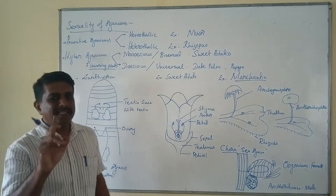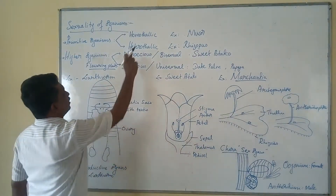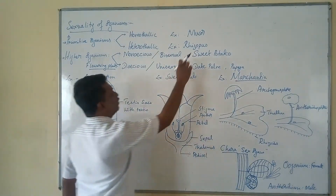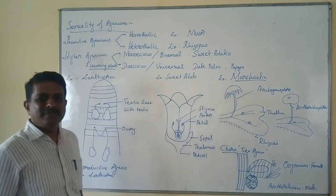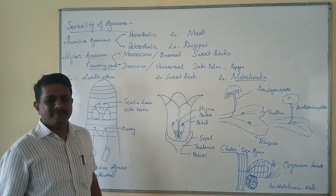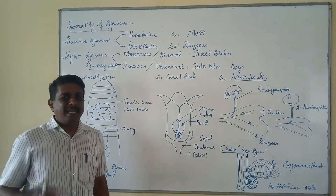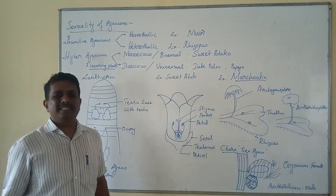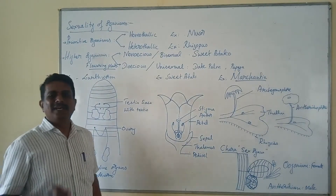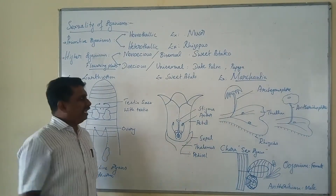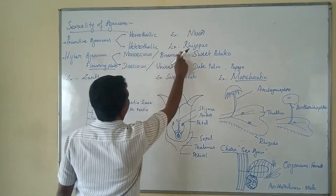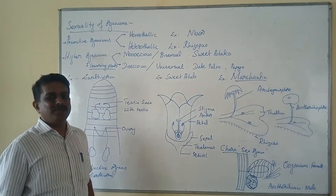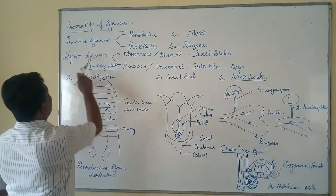In case of primitive organisms, if the gametes are present on the same plant, such organisms are called homothalic. This condition is seen in case of Mucor, which is a type of filamentous fungi. In some cases the gametes are present on different plants; such organisms are called heterothalic. A classical example of a heterothalic organism is another filamentous fungi called Rhizopus.